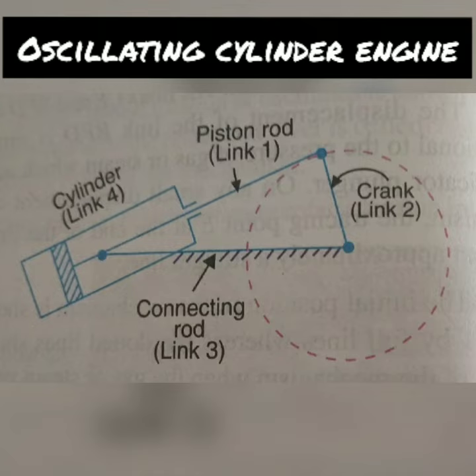In this mechanism, the link 3 forming the turning bar is fixed. The link 3 corresponds to the connecting rod of a reciprocating steam engine mechanism. When the crank rotates, the piston attached to the piston rod reciprocates, and the cylinder oscillates about a pin pivoted to the fixed link at A.